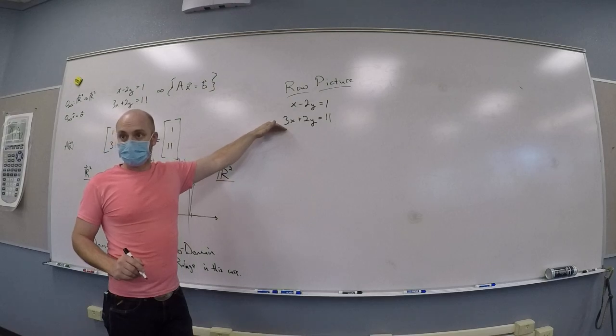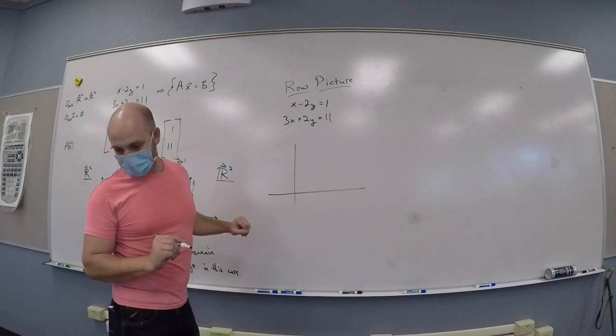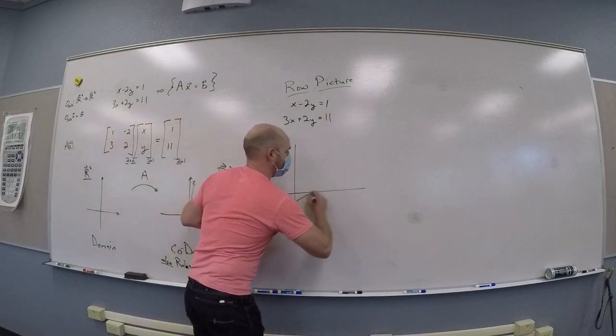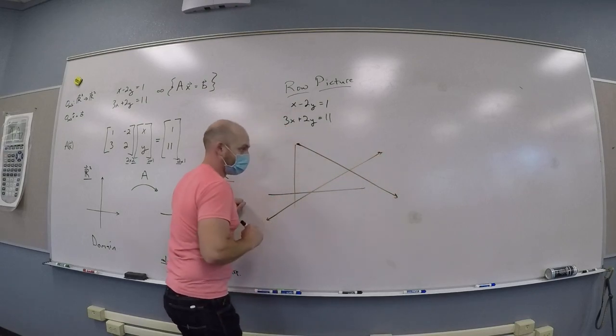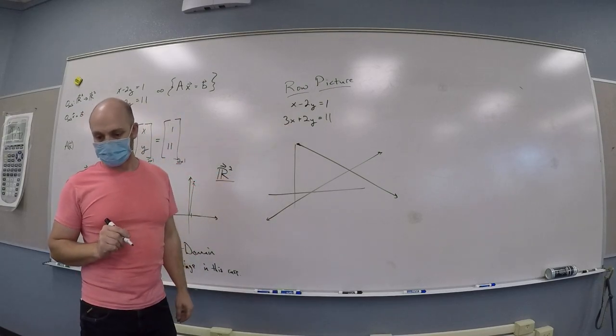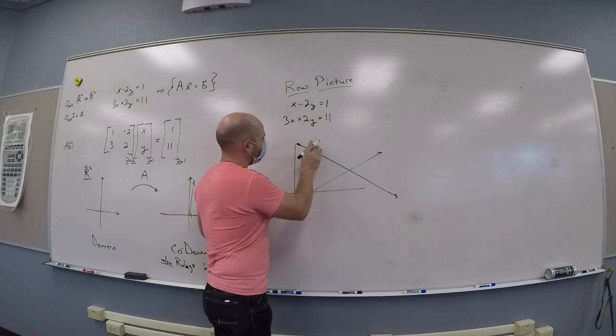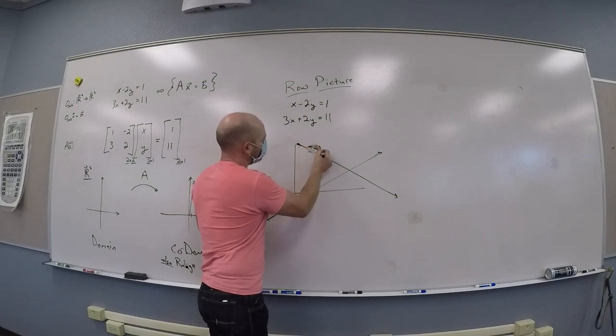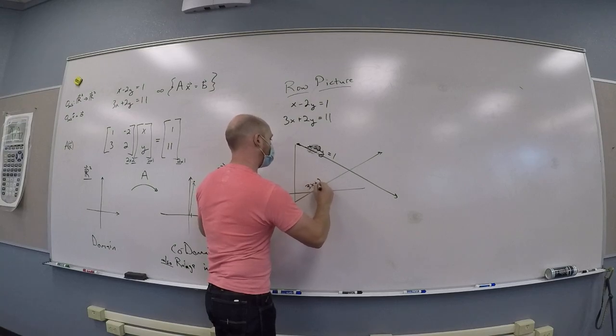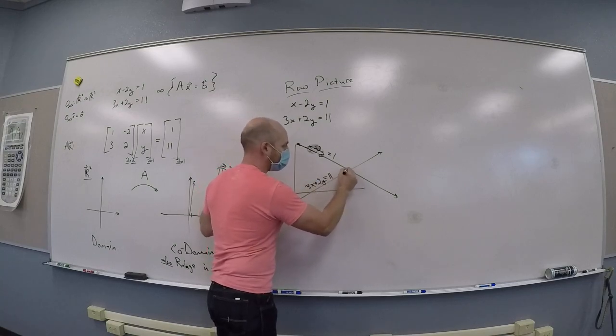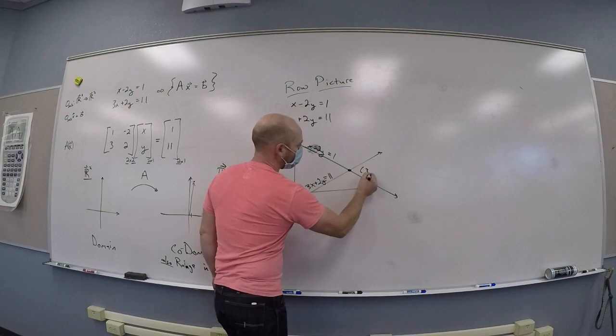One way I could solve this is I could plot these two lines and see where they intersect. So here I have very carefully done that. These are not appropriate plots. This might be my equation x minus 2y is 1, this might be my equation 3x plus 2y is 11. This meeting point happens to be at (3, 1).